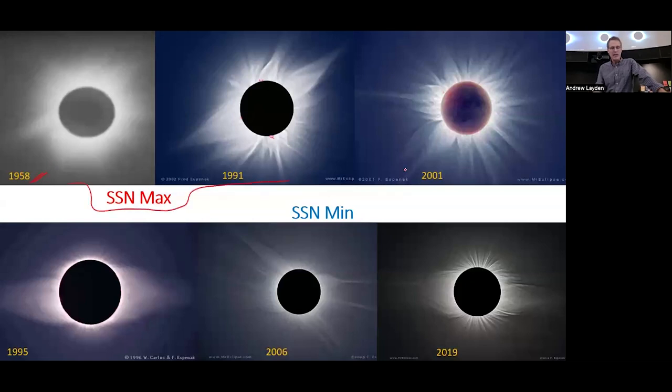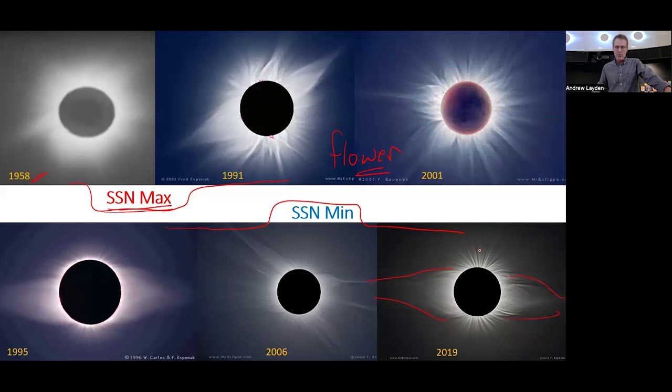Let's try to make sense of it here. We've got the 1958 sunspot maximum video, the 1991 and the 2001. We get this flower pattern in the corona shape and structure when we're at a sunspot maximum, when there's a lot of magnetic activity on the sun. We get at sunspot minimum these three eclipses: the 1995, 2006, and the beautiful 2019 eclipse. The equatorial streamers and the polar brush, we get the dipole pattern showing up. So the appearance of the corona, the shape and structure of the sun's corona, is tied closely to where we are in the sunspot cycle.